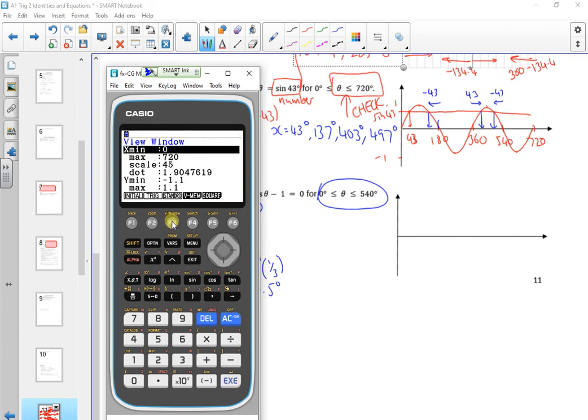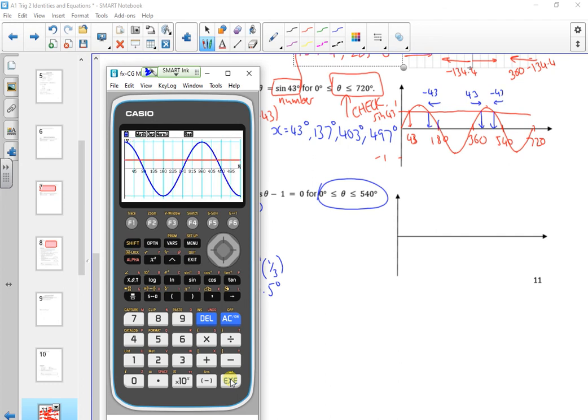So my viewing window should be 0 to 540. Oh, that's a bit easier. Let's see what we get in terms of the picture.